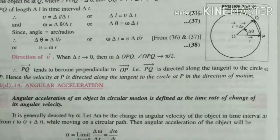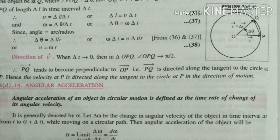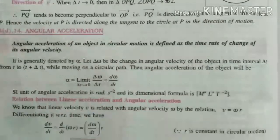When t approaches zero, then delta OP and the angle become very small. PQ tends to become perpendicular to OP, which is the direction of the tangent. This represents v in the direction of the arc.